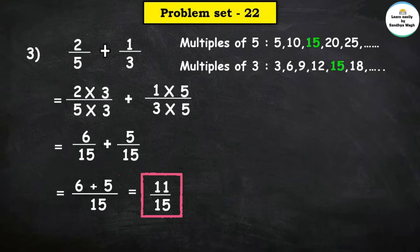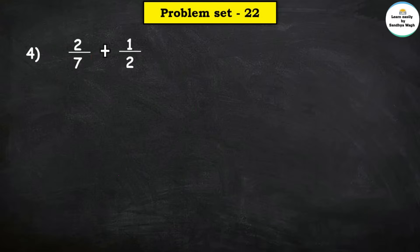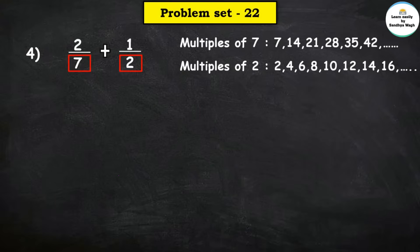So here our final answer is 11 upon 15. Next: 2 upon 7 plus 1 upon 2. Denominators are 7 and 2. Find the multiples of 7 and 2 — their common multiple is 14.